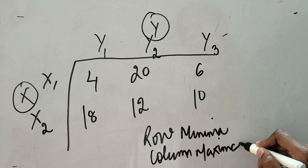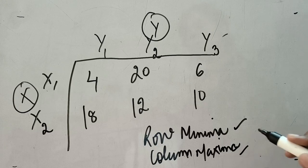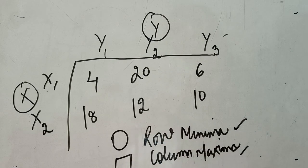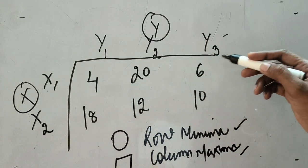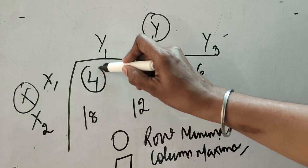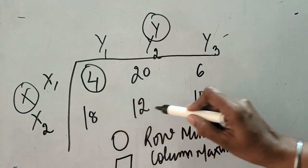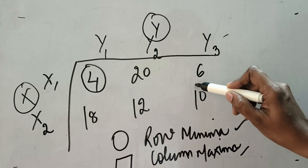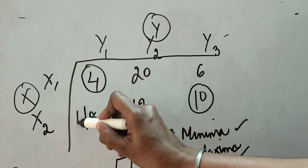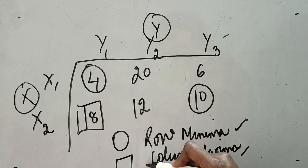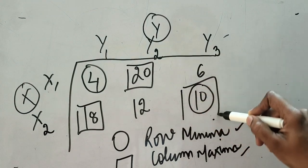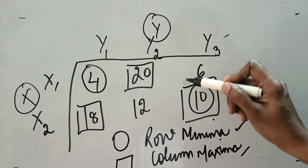Row-wise we always look for the minimum value, and column-wise we always look for the maximum value. For row minima, we put a circle on the element; for column maxima, we put a square. In the first row, we identify the minimum element and circle it. In the second row, the minimum is 10, so we circle it. Then column-wise, we identify the maximum in each column and mark it with a square.